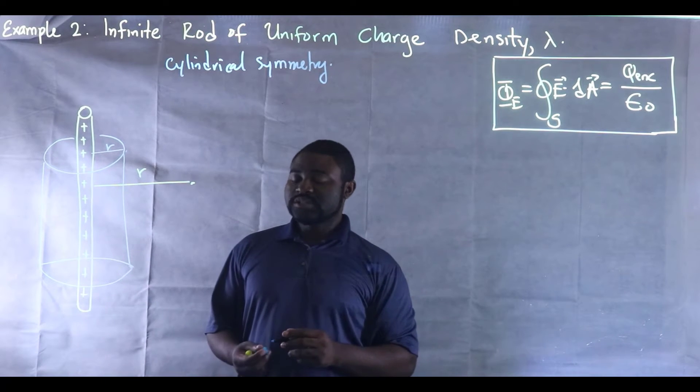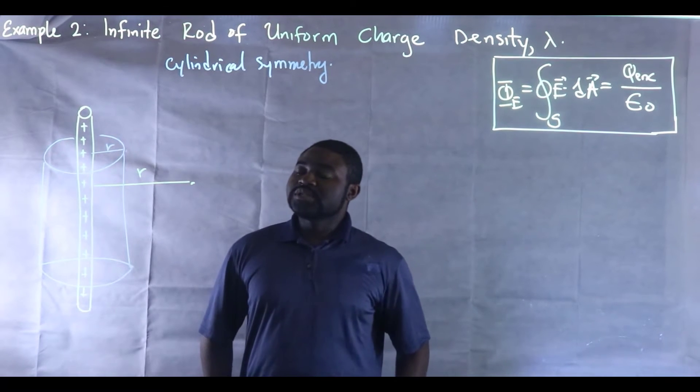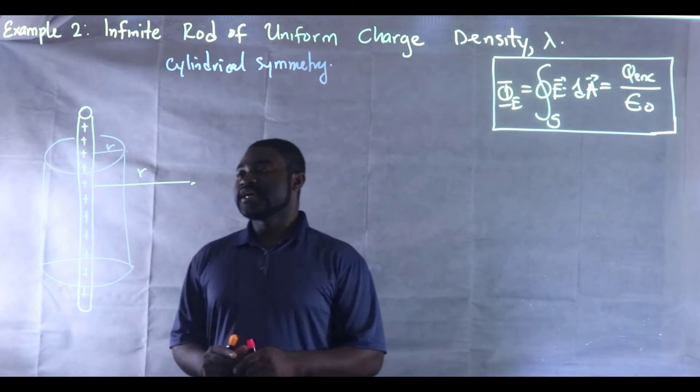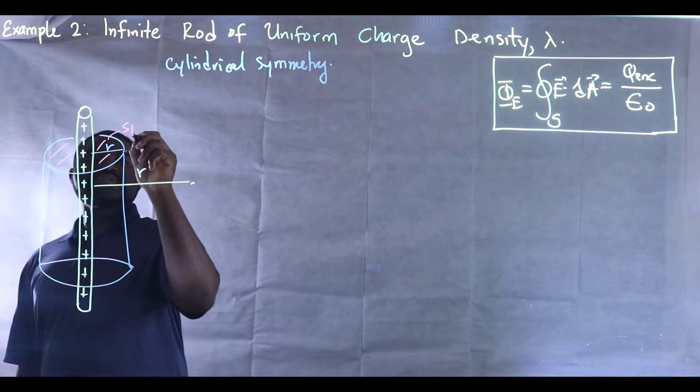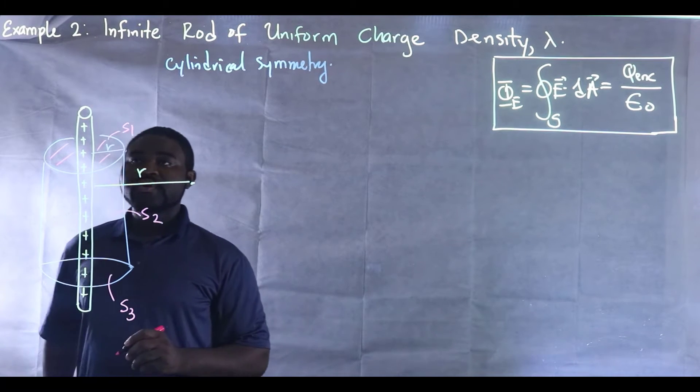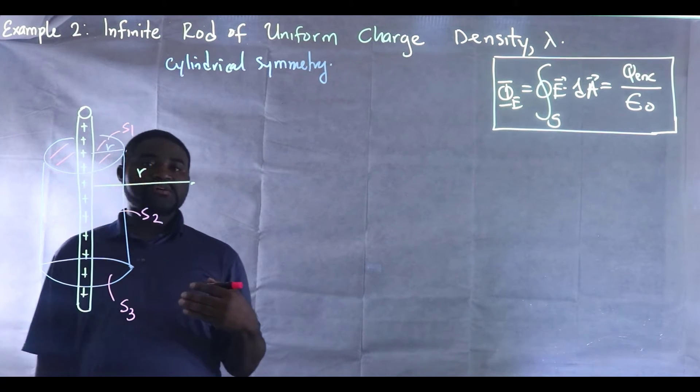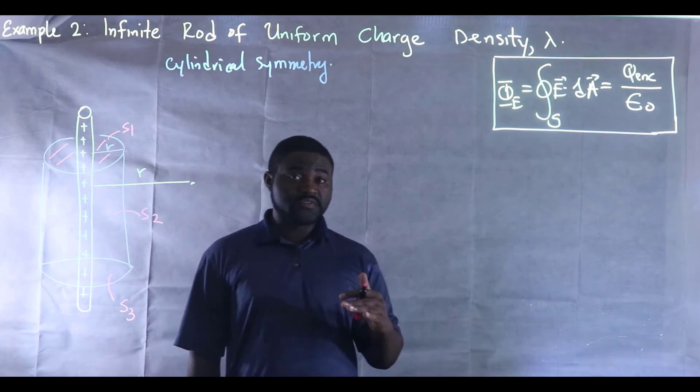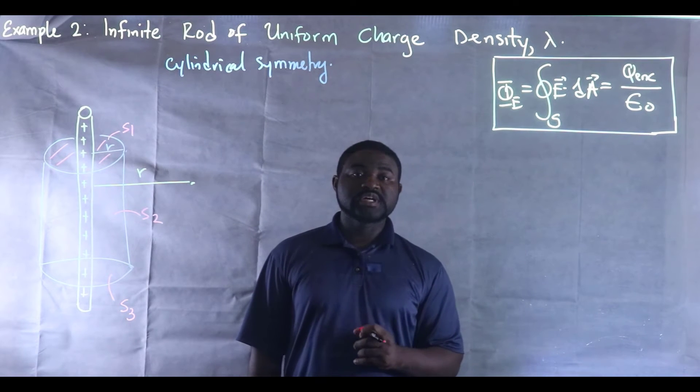Now the very second step that we will have to use is to determine our Gaussian surface. Now I can divide this up into three groups: this is S1, this is S2, and this is S3. We can realize that the field acting on any surface is perpendicular to that surface. Keep that in mind: the electric field on any surface at any point is always perpendicular to that surface at that given point.